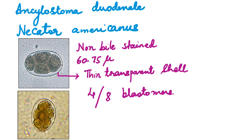Next are the hookworms — Ancylostoma duodenale and Necator americanus. These eggs are non-bile-stained, 60 to 75 microns in size, oval in shape with a very thin transparent shell. Remember Ascaris had such a thick shell — this is very thin. You can see that the ovum has started to undergo segmentation, so you can appreciate either four or eight blastomeres inside the shell. So hookworm eggs: non-bile-stained, 60 to 75 microns, thin transparent shell enclosing four to eight blastomeres.